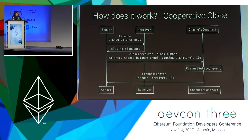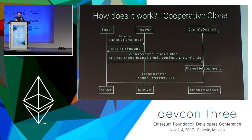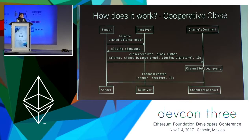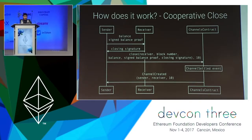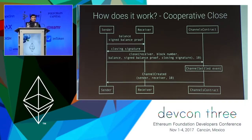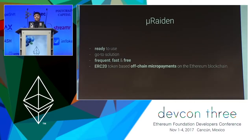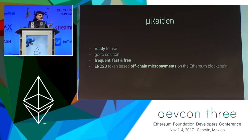Regarding closing a channel, we can find ourselves in three states. One is a cooperative close, which is the best case scenario: the sender queries the receiver for a closing signature and then closes the channel himself by providing his balance signature and the receiver's closing signature. If anything goes wrong, we have a challenge period where the channel can be closed by the receiver by providing that last saved balance proof.